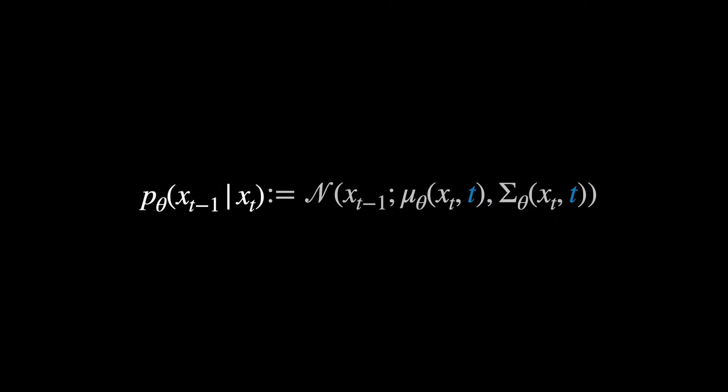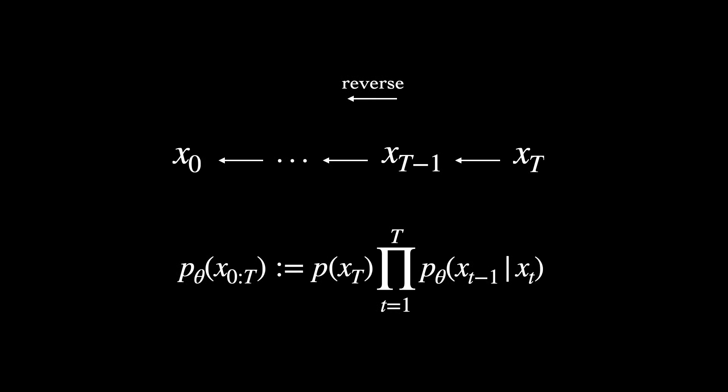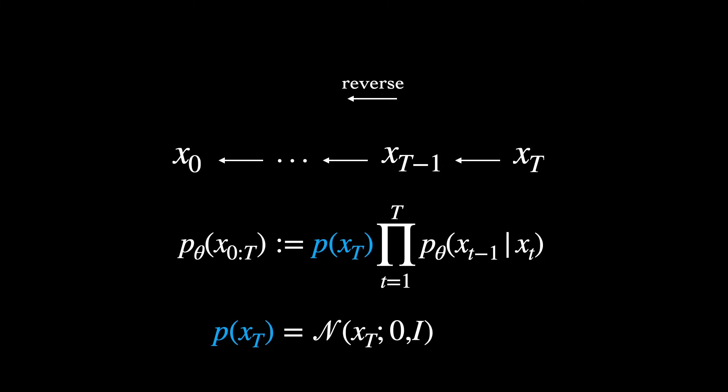Like the forward process, the reverse process is set up as a Markov chain, and we can write out the joint probability of a sequence of samples as a product of conditionals and the marginal probability of x big t. So what is p of x big t here exactly? Well it's the same as q of x big t, the pure noise distribution.